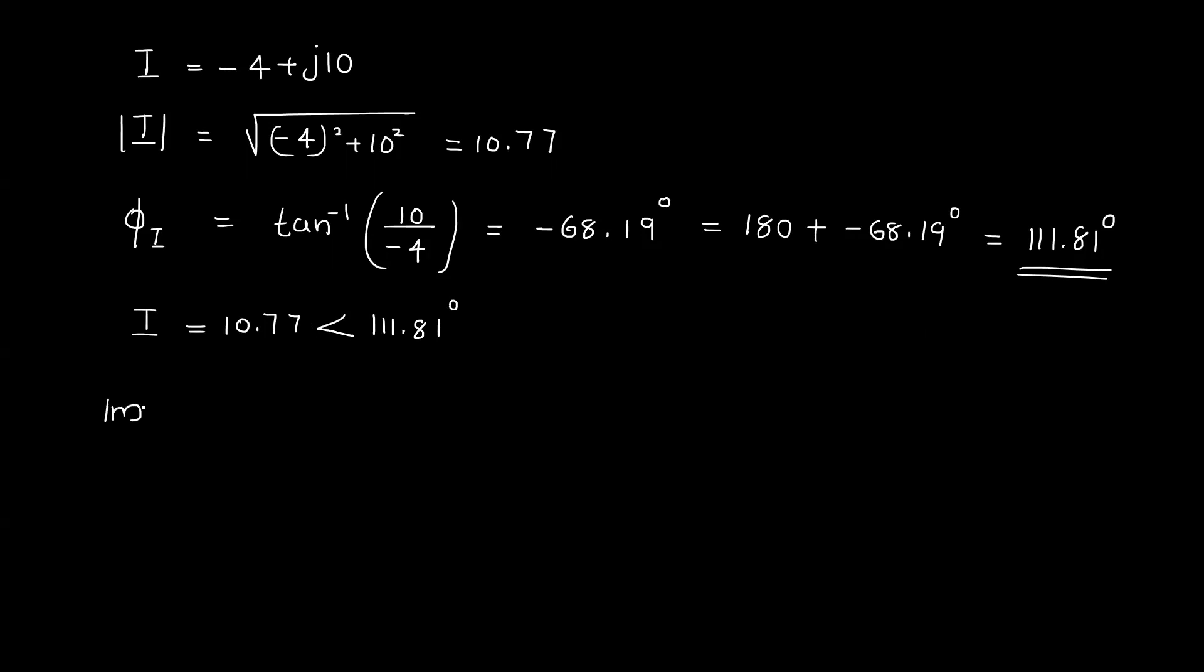For impedance, Z is equal to V by I. That will be equal to 100 angle 36.86 divided by 10.77 angle 111.81.